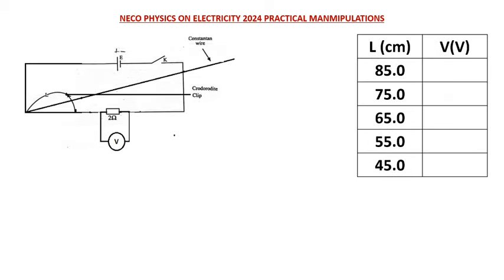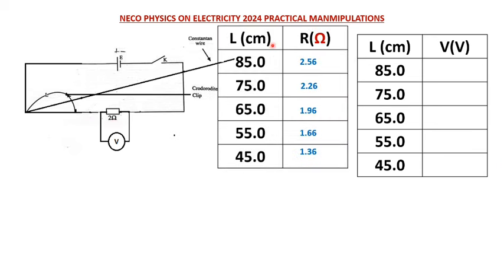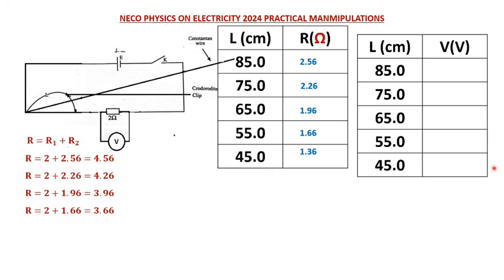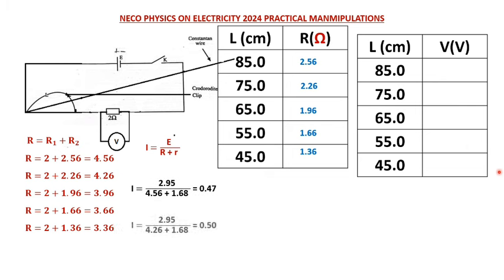For Part 2, the constantan wire is now connected in series with the 2Ω resistor, so we use a different approach for total resistance: R_total = R₁ + R₂, adding the 2Ω resistor and the wire resistance at each given length. We then obtain the current flowing through the circuit using I = E/(R + r), with the same internal resistance calculated earlier, and plug in these values to get the current for each length.